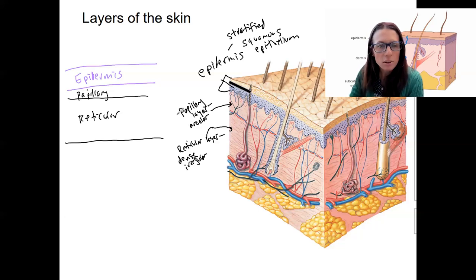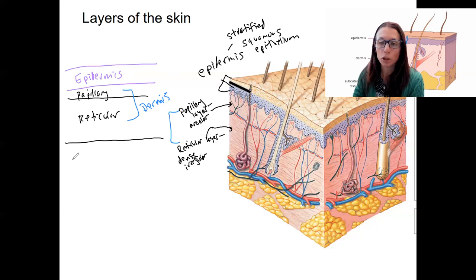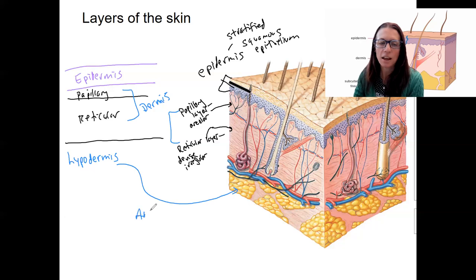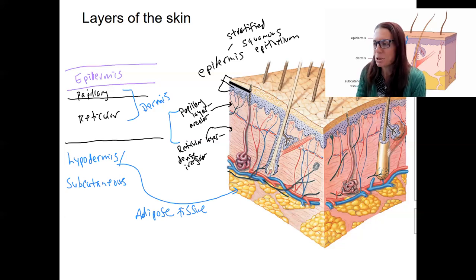I should label one more thing here. These two connective tissue layers together are called the dermis, and the epidermis sits on top of the dermis — that is the skin. There's one more layer drawn here, which is actually below the skin. Below the skin — hypo to the dermis — is the hypodermis, also called the subcutaneous layer. This is made up of adipose tissue, which is fat. Hypo means below, sub means underneath — they're synonymous in this situation. Below the dermis is adipose tissue.